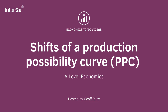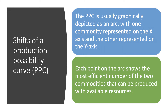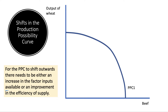A PPC shows how much an economy can produce given existing resources, and it's normally drawn as an arc with one commodity on the x-axis and another product or type of product on the y-axis. Each point on the PPC shows the most efficient quantity of two commodities that you can actually supply with the available factor resources. The arc is normally drawn as concave to the origin based on an assumption that production — in this case output of wheat and beef — is subject to the law of diminishing returns.